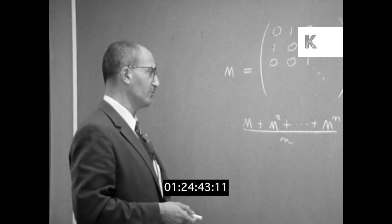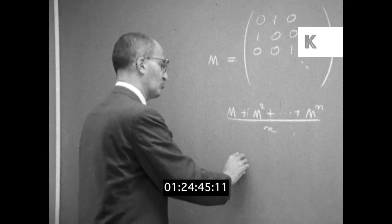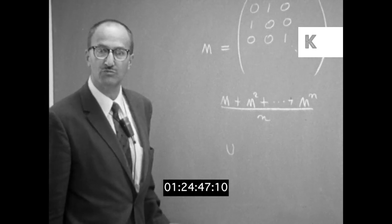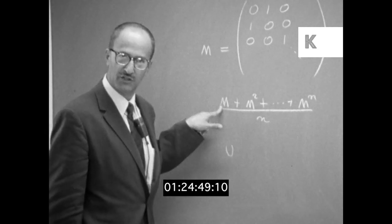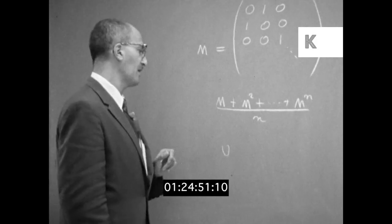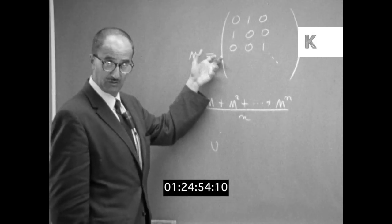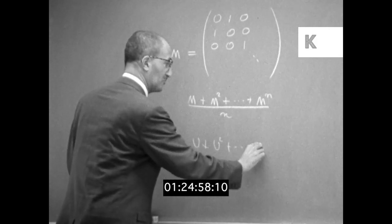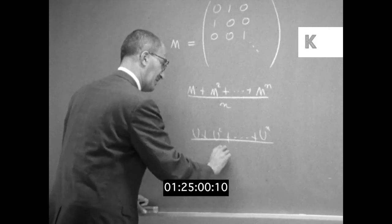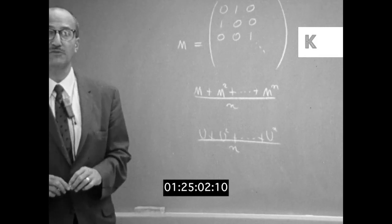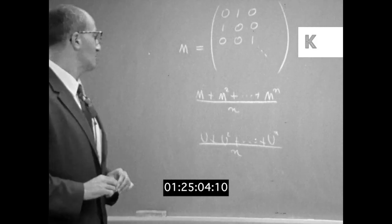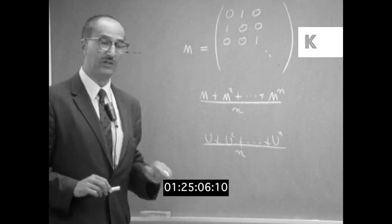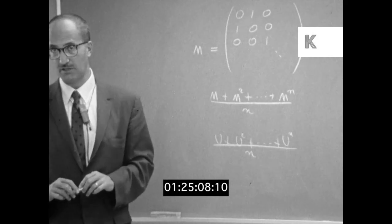And in the same way the coffee example can be studied in terms of a unitary operator U, the appropriate generalization of a matrix, on an infinite dimensional instead of a hundred dimensional Hilbert space, and the uniform brownness of the cup of coffee is a property of the average U plus U square plus U to the N over N, and the limit of that as N becomes infinite.